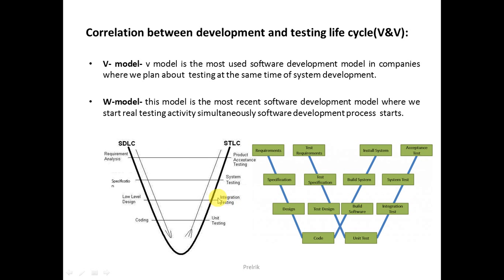To fix this limitation, they implemented one more model called the W model, where the testing approach is called V&V (Verification and Validation). They introduced one more 'V' shape into the model. So if you look at W, there is the original V model plus one more V introduced — that is how it became the W model.